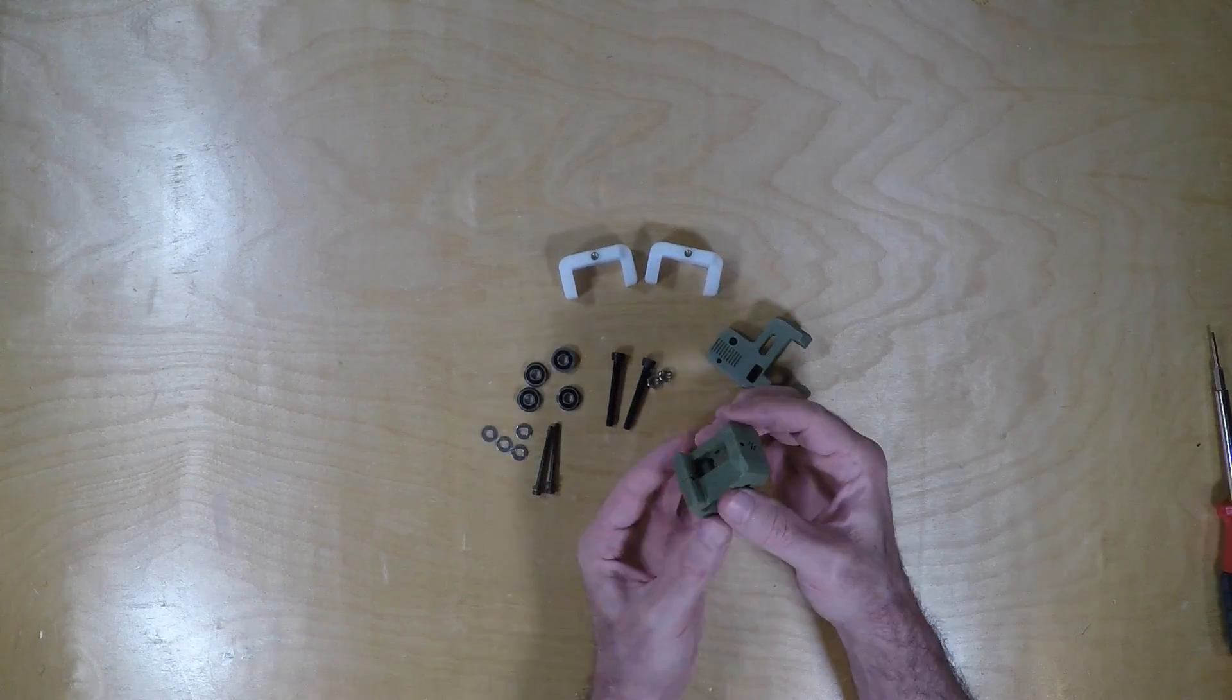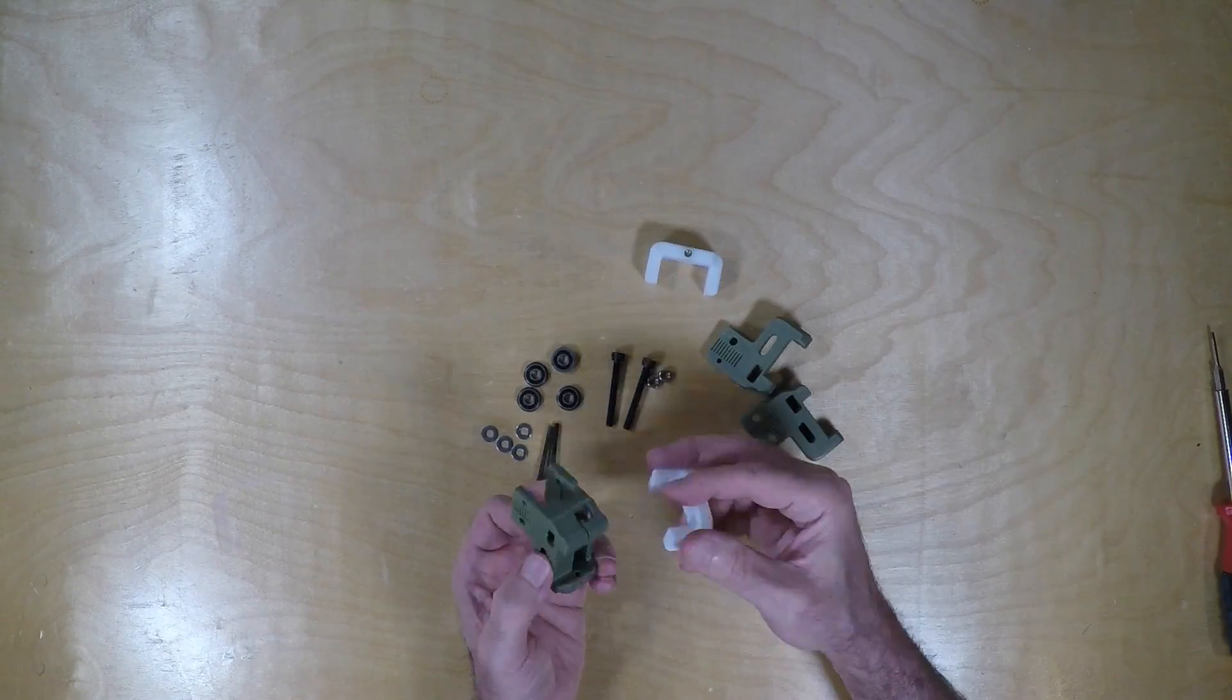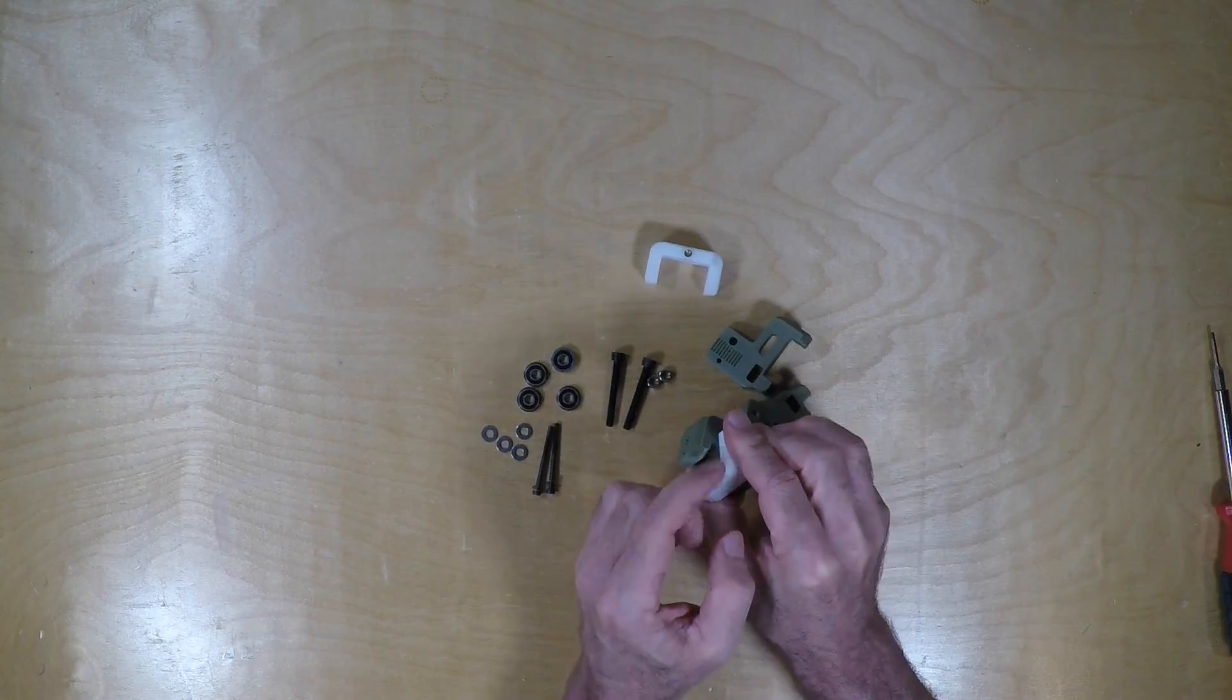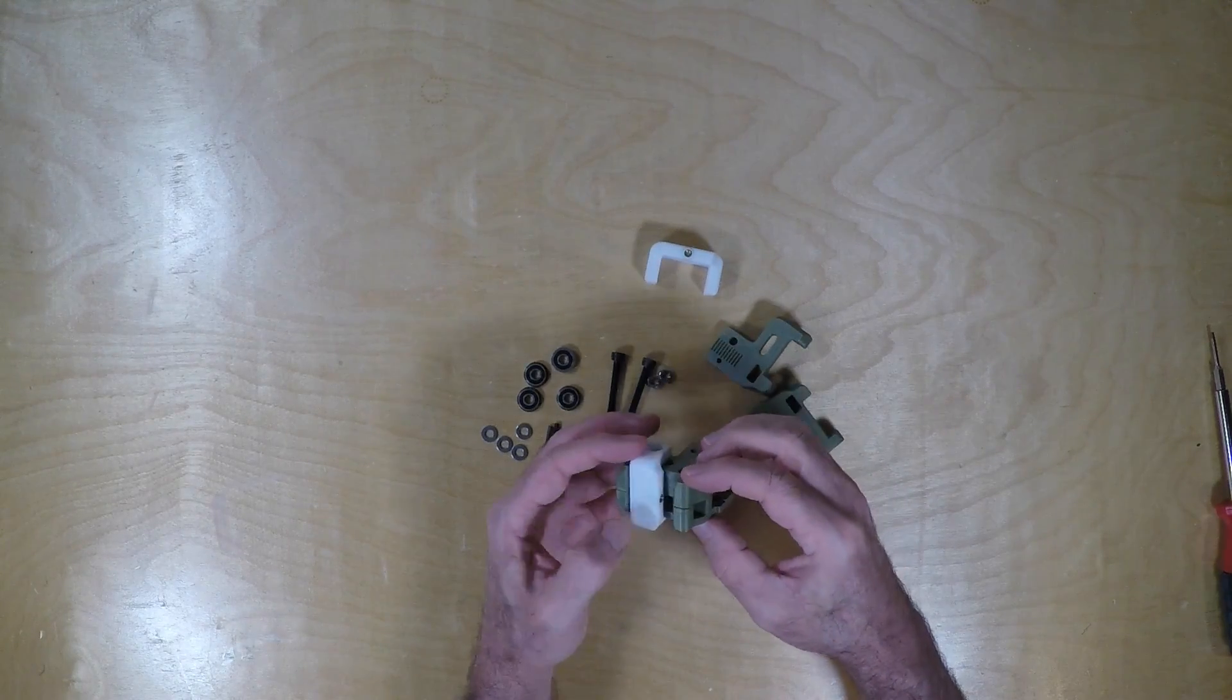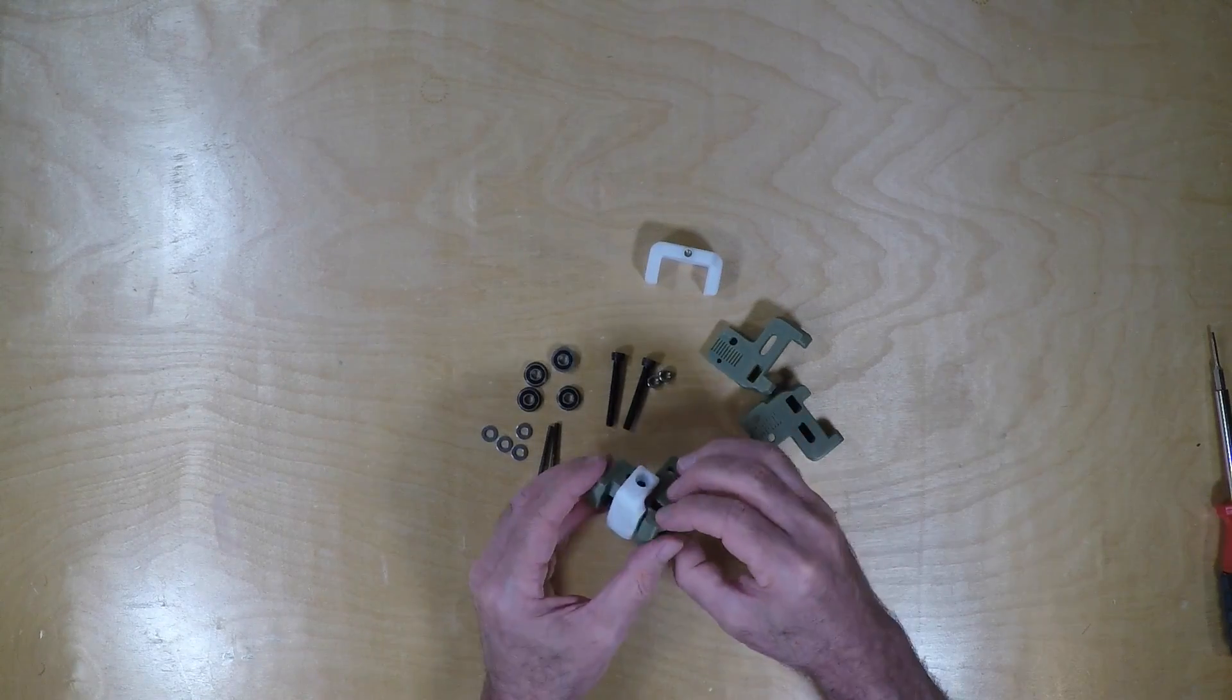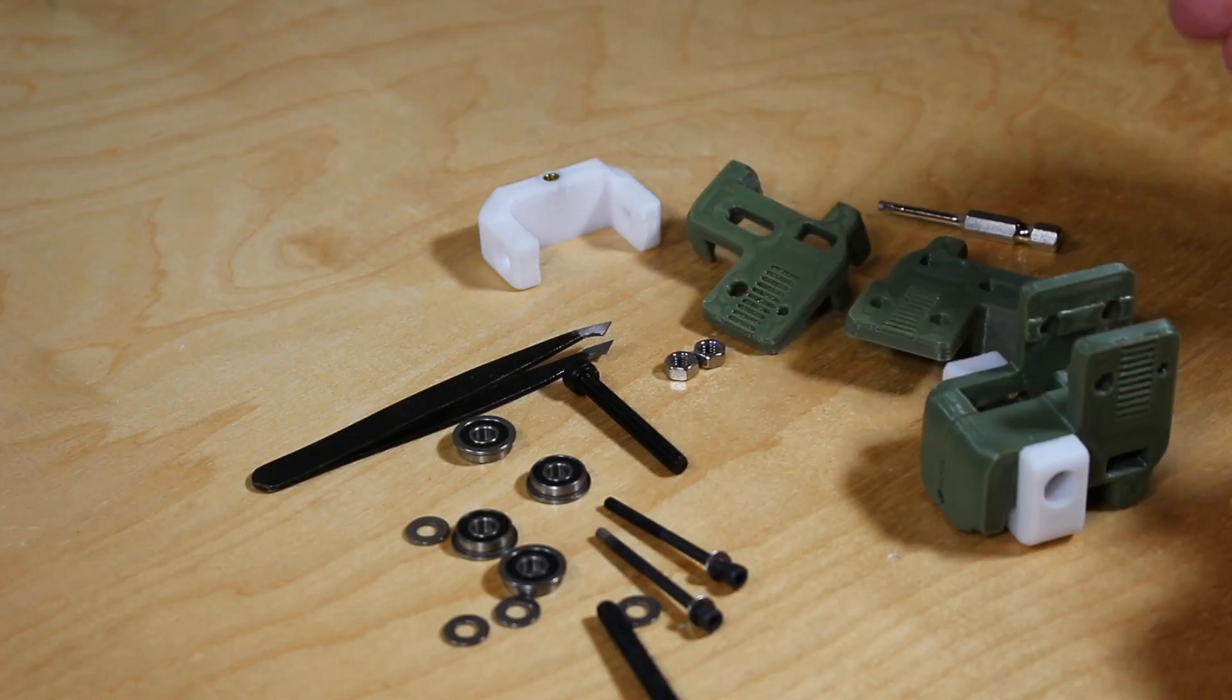And by now you must have 3D printed these. They fit together reasonably nicely, and you can see how these slide the tensioners, which will be used later to tighten the belt tension. Make sure the not so flat side is facing the inside where the back flat side is facing the outside.